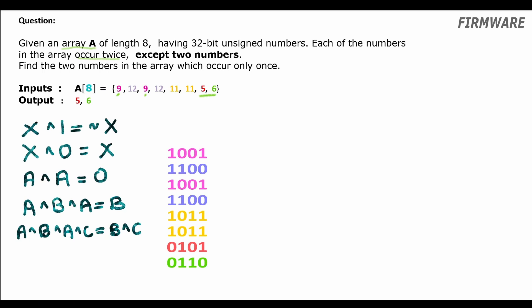We have 8 numbers here. In this table we have the binary form of the numbers in the array. All the numbers occur twice except these two numbers 5 and 6. Now what would be the result if we do an XOR of all the numbers in the array?